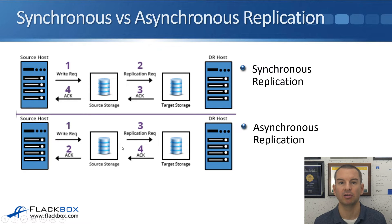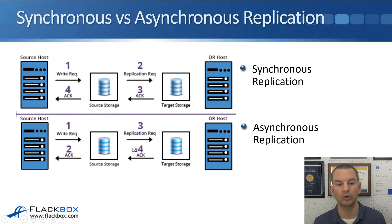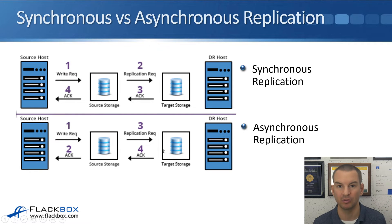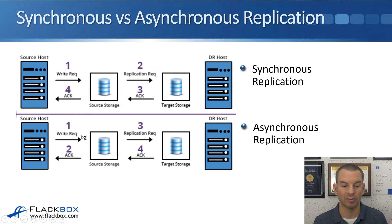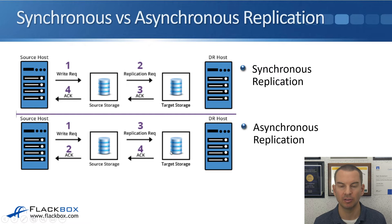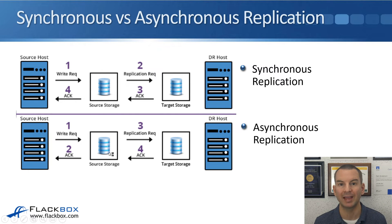Because with asynchronous replication the source storage sends an acknowledgement immediately back to the client, we don't have that time and distance limitation — we're not going to time out the application on the source. However, there is still some limitation depending on your schedule. For example, if you were trying to replicate every 30 seconds and the source was in London and the target in Sydney with a lot of writes, that just wouldn't work. You need a reasonable schedule and reasonable delay so all data can be written to the target and the acknowledgement received before it's time to send data again.